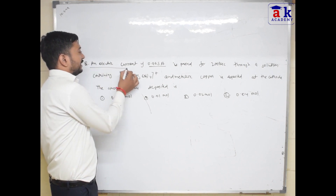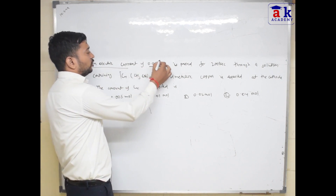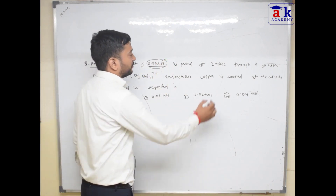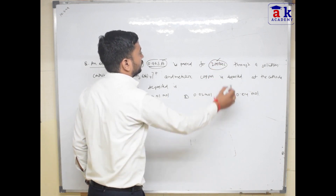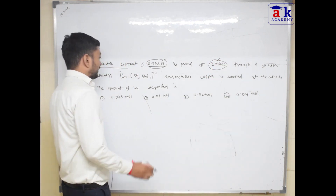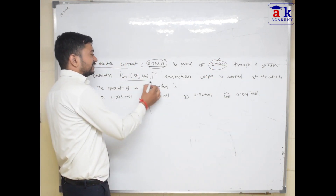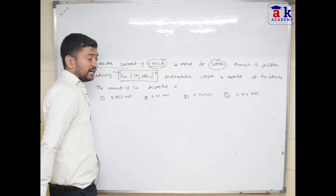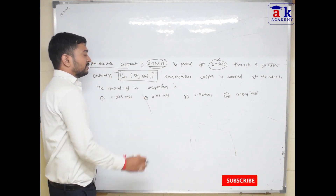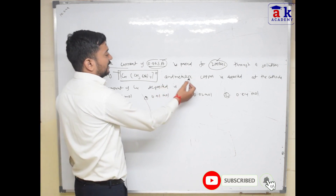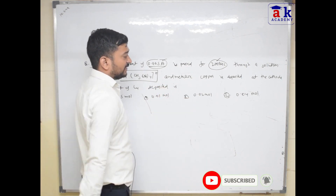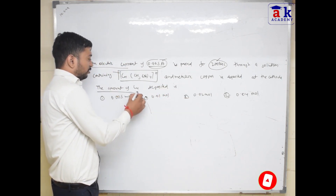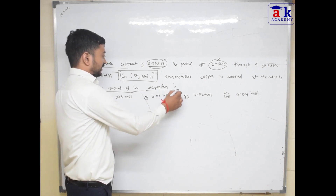An electric current of 0.965 Ampere is passed for 2000 seconds through a solution containing the ion Cu(CH₃CN)₄⁺, and metallic copper is deposited at the cathode. The amount of copper deposited is to be determined.